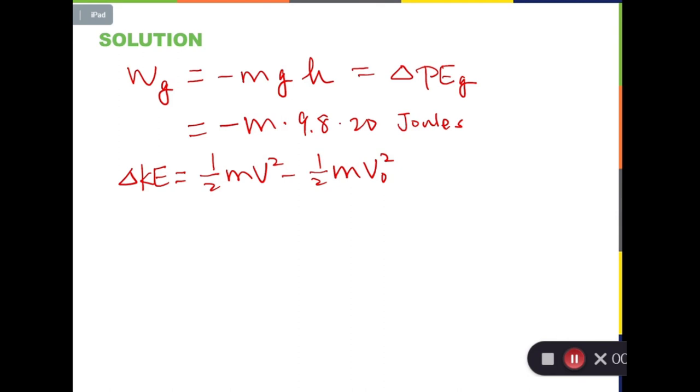So delta KE is equal to 1/2 mv squared minus 1/2 mv_0 squared. And this must be equal to the lost amount of PE_g, which of course we should use positive because the gaining of KE should be positive. So which is equal to m times 9.8 times 20.